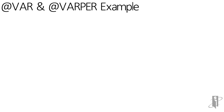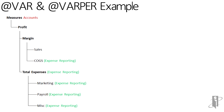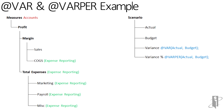Here's a simple example. This is my accounts hierarchy — notice that Cost of Goods Sold and all expense members are tagged as expense reporting, done inside the Essbase outline. Applications like Hyperion Planning will automatically apply the expense tag in your outline. Here's my scenario dimension: I have Actual, Budget, and two variance members — ATVAR(Actual, Budget) and ATVARPER(Actual, Budget) for variance percentage.